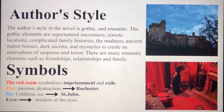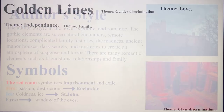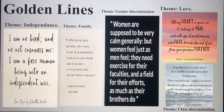Symbols: the red room symbolizes imprisonment and exile — that is what happens when you commit a sin or make a mistake, as with Jane in the red room. Fire represents passion and destruction, which has to do with Mr. Rochester. Ice and coldness represent St. John. So Rochester and St. John are completely different — Rochester is always the fire person, St. John is ice cold. The eyes are the windows to the soul, as seen in the golden lines. Independence quote: 'I'm no bird and no net ensnares me; I'm a free human being with an independent will.'